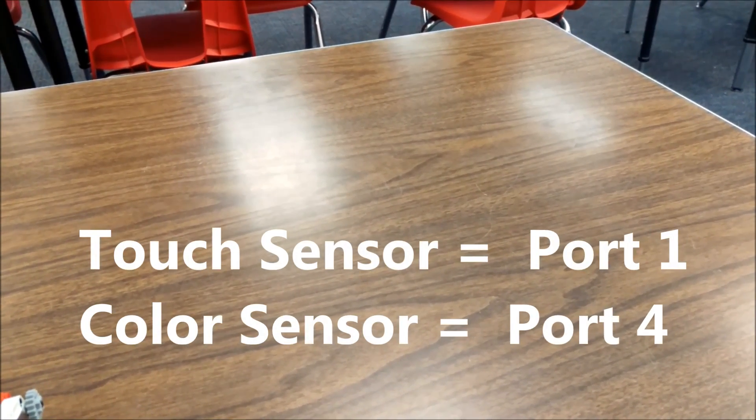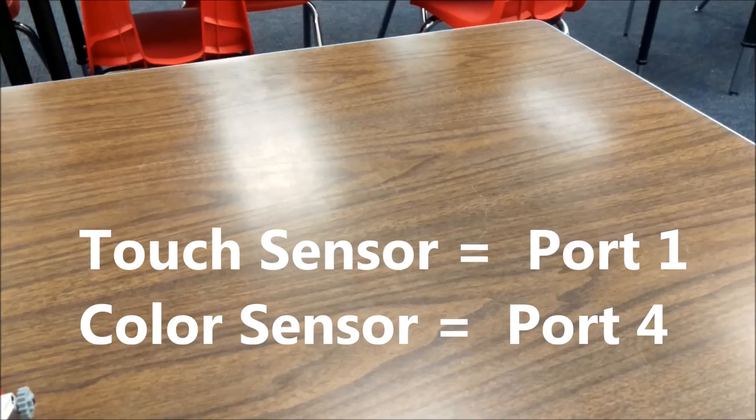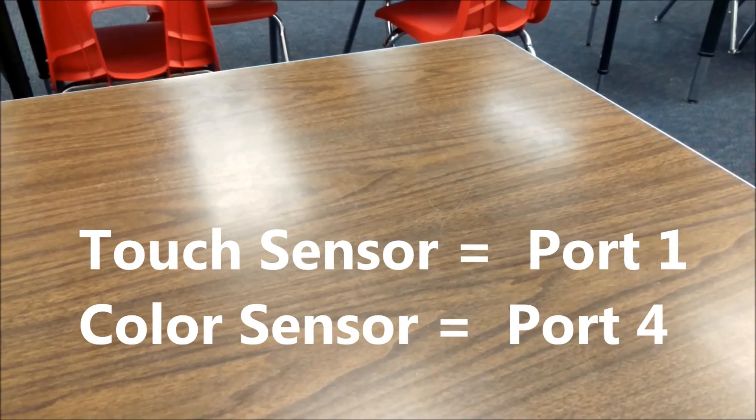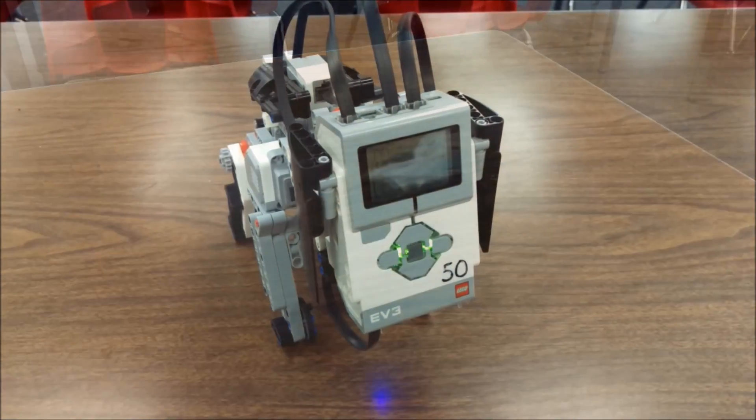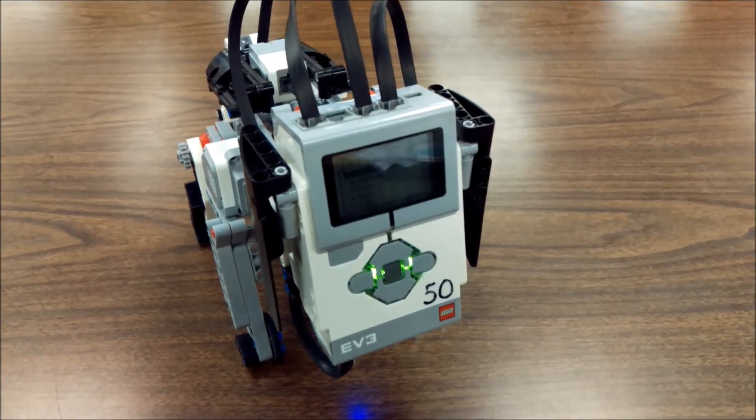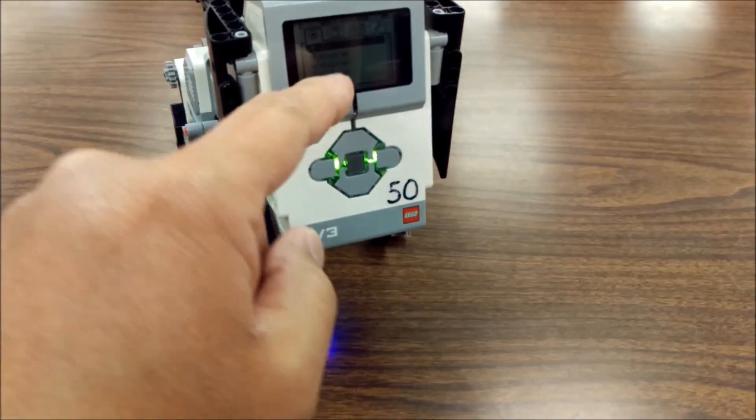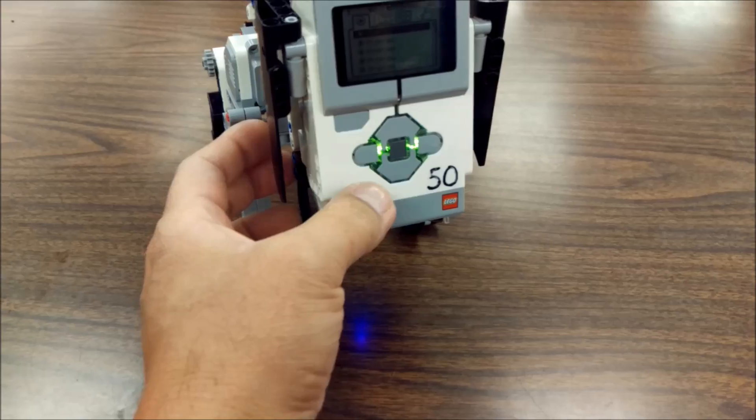So one more time: the touch sensor will go into port one, and the color sensor will go into port four. Okay, so I have turned the puppy on, and when you look for the program, it's going to be puppy and then it should be zero zero three.